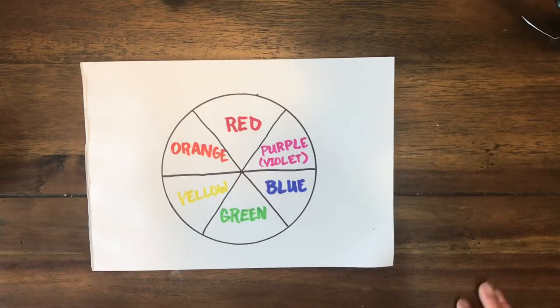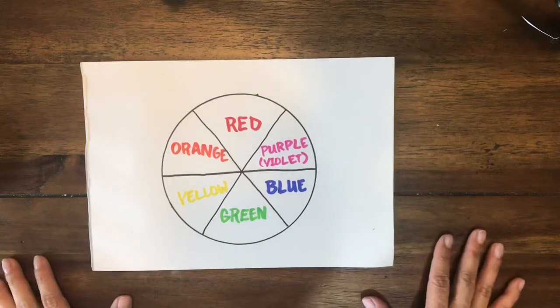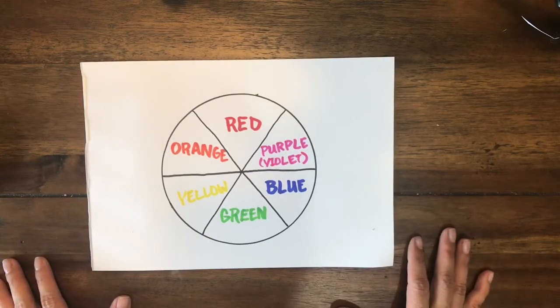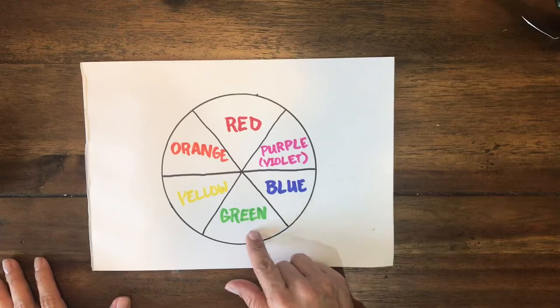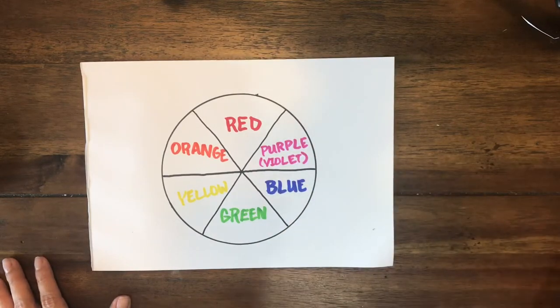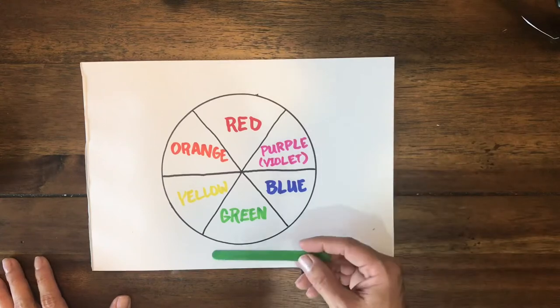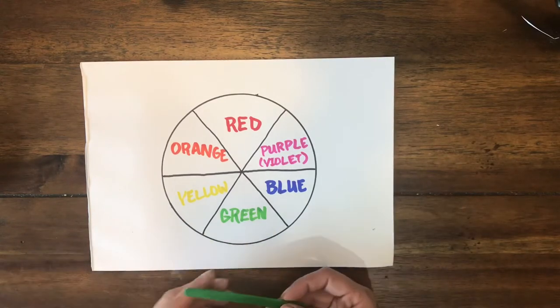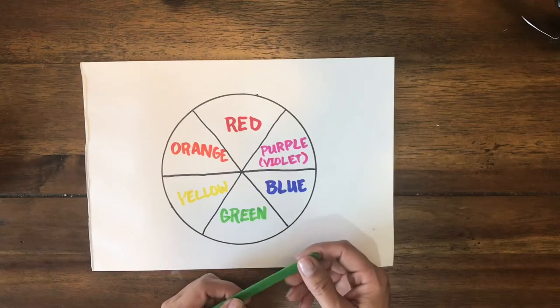All right, this is the scavenger hunt. So what we're gonna do is we are gonna go around the house and see if we can find things that match our color wheel. So for example if I wanted to go find something green I have a popsicle stick right here, it's green.